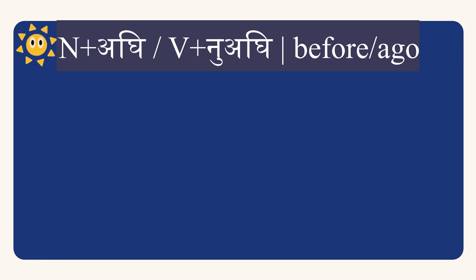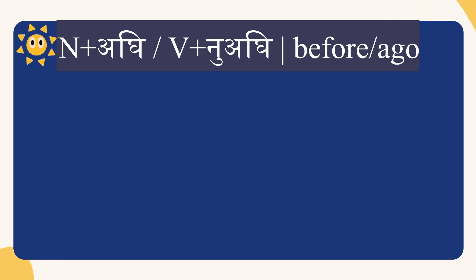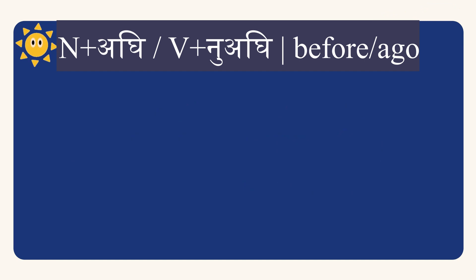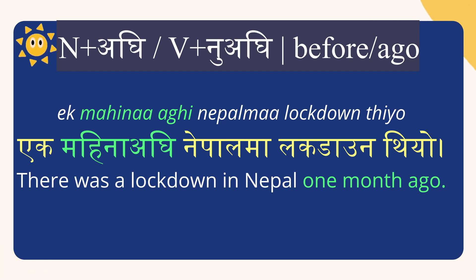The next conjunction is 'before'. For noun plus before, we use aghi; for verb plus before, we use nu aghi. Dui din aghi ma Dharan ma thiye — I was in Dharan two days ago. Ek mahina aghi Nepalma lockdown thiyo — there was a lockdown in Nepal one month ago.